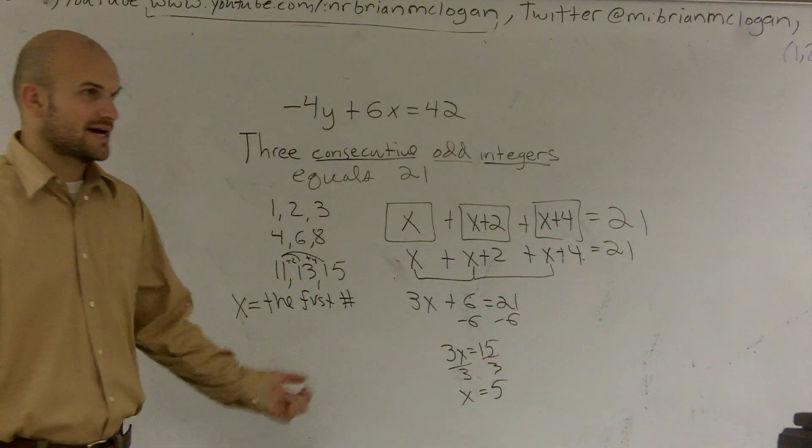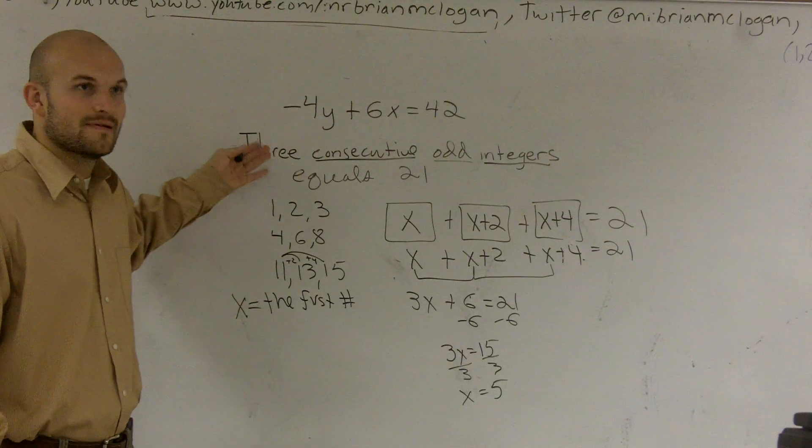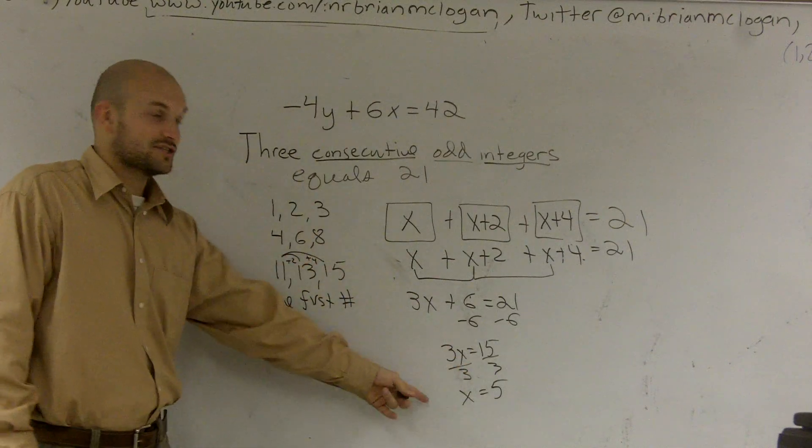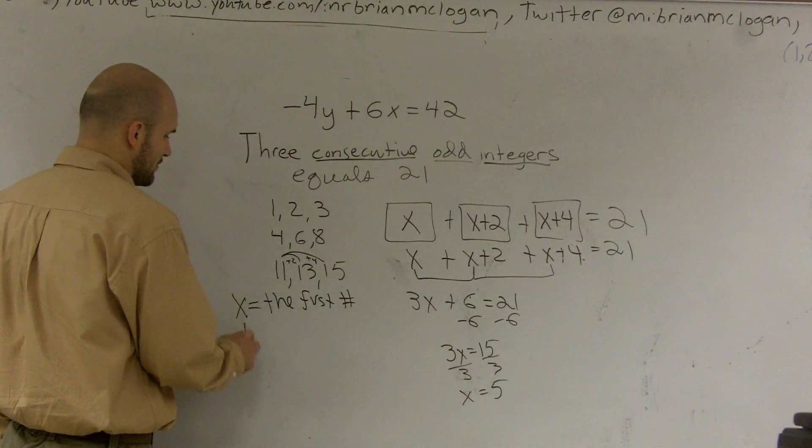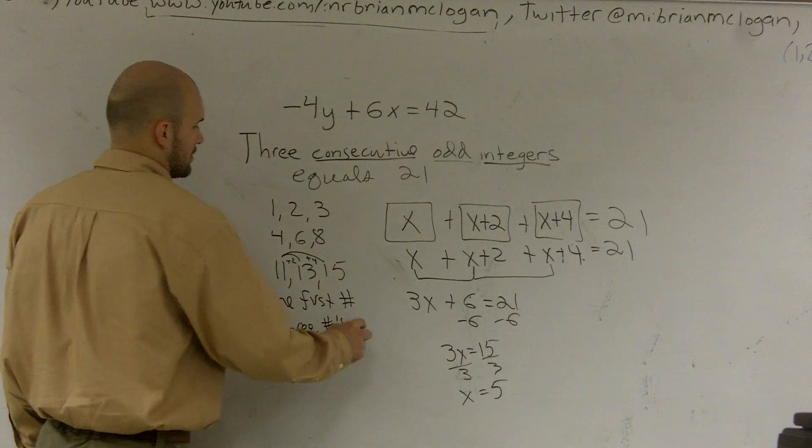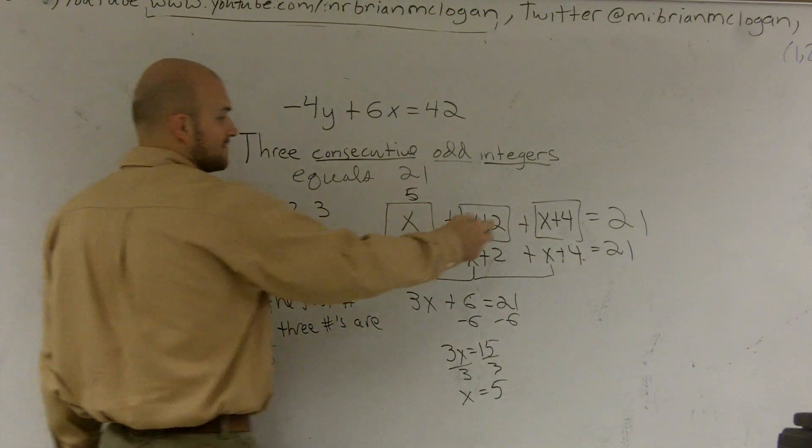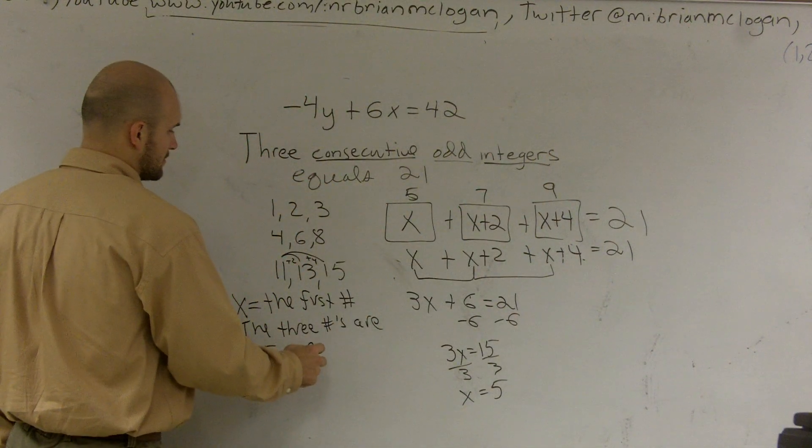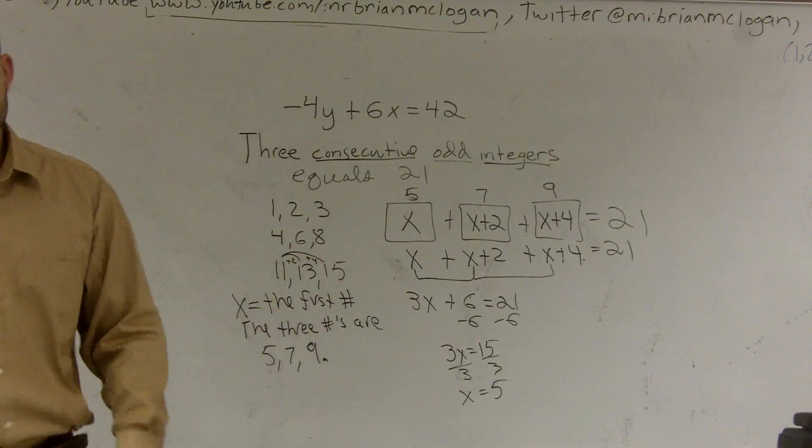But does that make sense? X equals 5? No. Because the question asks to find three consecutive integers. That's only one integer. Or that's just the value of your X. So you need to write the three numbers are 5, 7, and 9. Make sense?